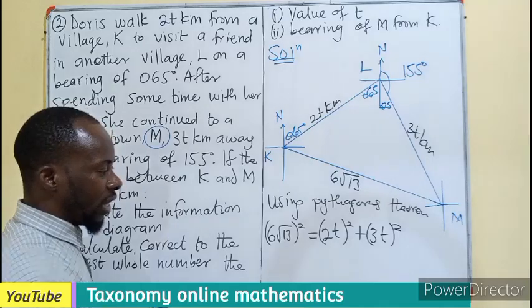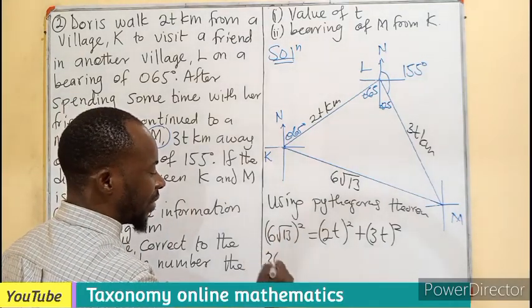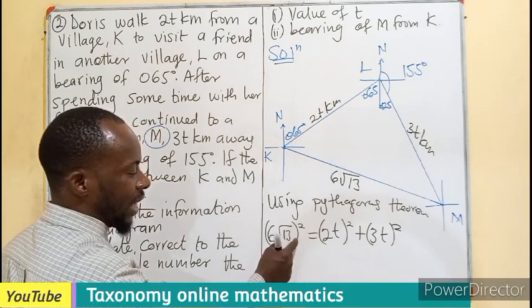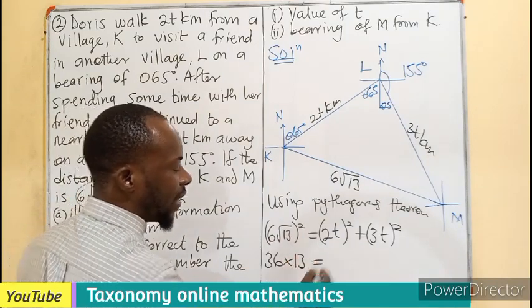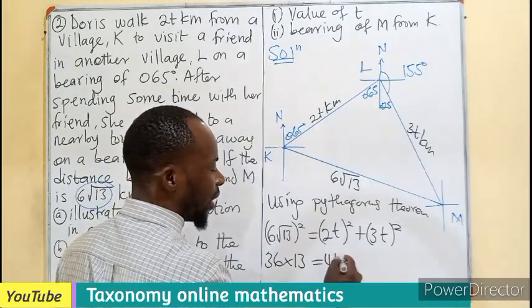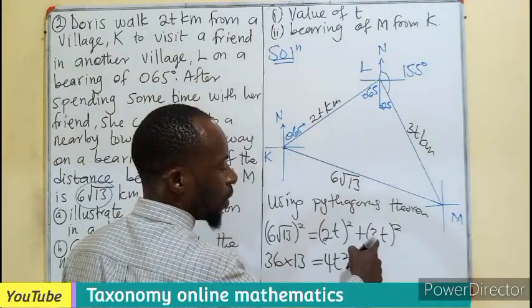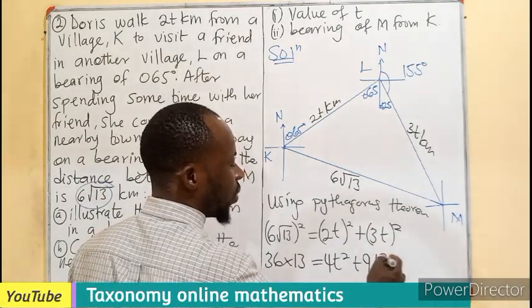So we know in this case, we are going to square the rational to make it 36. Then we square the irrational where the root will cancel to give us only 13. If you square the 2, you get 4. Square the T, you get T squared. If it's square 3, you get 9. Square T, you get T squared.